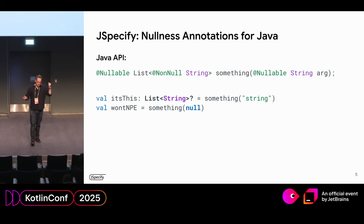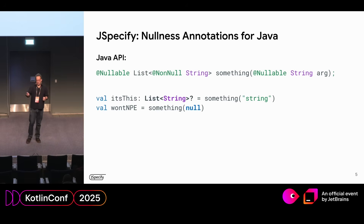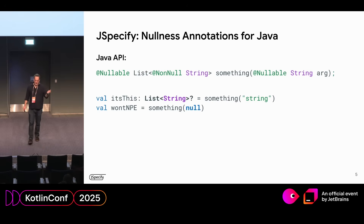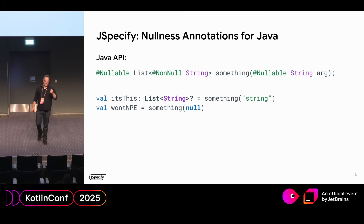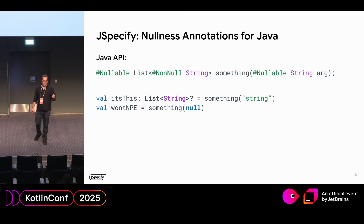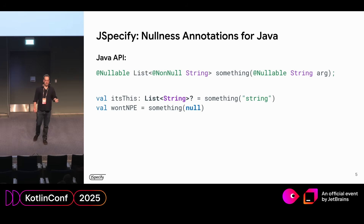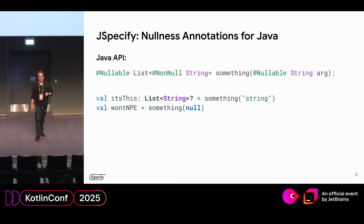The answer to that is to use JSpecify nullness annotations on your Java APIs. Here's a simple example. If you annotate that API with @Nullable and @NotNull, you end up with something that looks like this. Then when you call that from your Kotlin code, Kotlin makes sure you only call it the way it was intended. You have no platform types here, even though you're calling a Java API. And that's good.